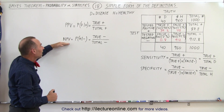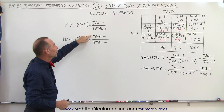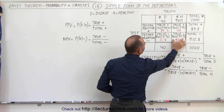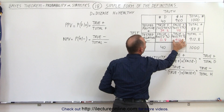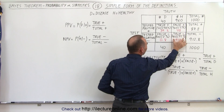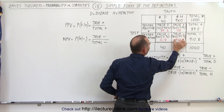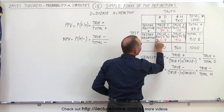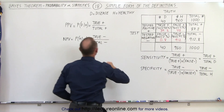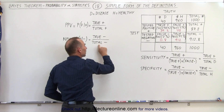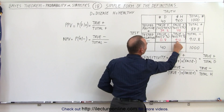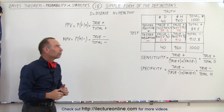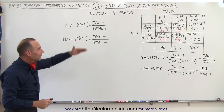The Negative Predictive Value is the ratio of the true negatives divided by the total negatives. The true negatives: of the 960, 912 actually tested negative — these don't have the condition, and 912 tested negative. You add to that the false negatives to get the total negatives, and when you divide the true negatives by the total negatives, you get 912 divided by 912.8. In our case, that was 99.91%. So those are the four key definitions.